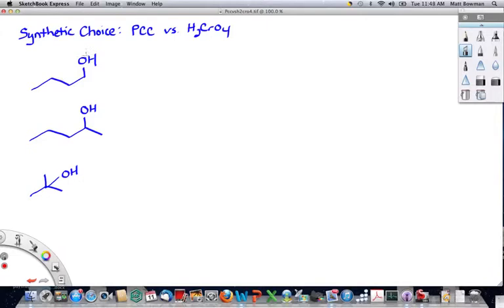Now, the main difference between these two involves a primary alcohol. When you treat a primary alcohol with PCC, and you have the solvent dichloromethane, you get an aldehyde.